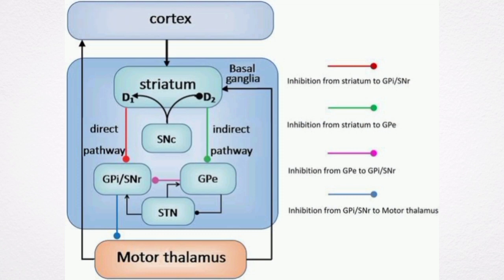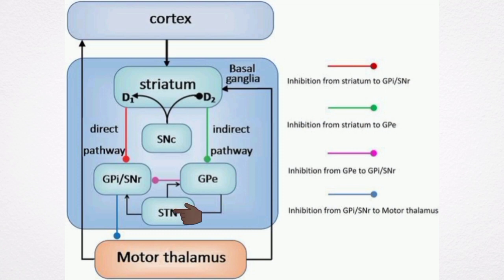When the indirect pathway is stimulated, the cortex excites the striatum. The striatum then inhibits the external globus pallidus. When the neurons of the external globus pallidus are inhibited, they are less able to inhibit the subthalamic nucleus. This enables the subthalamic nucleus to excite the substantia nigra pars reticularis and allows it to inhibit the thalamus, thus preventing it from exciting the cortex.